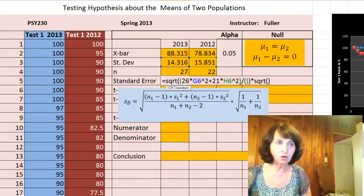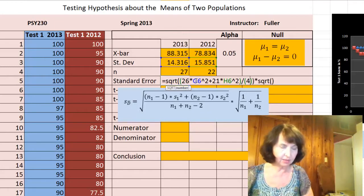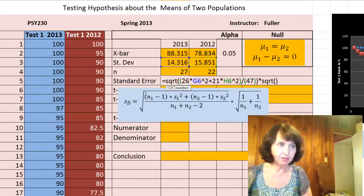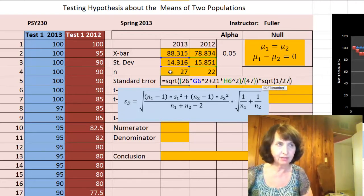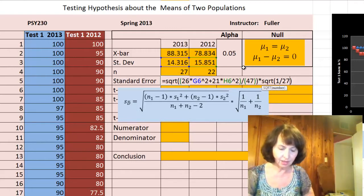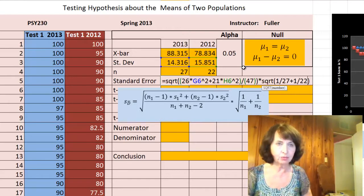This is all for the numerator. And denominator, we add 27 and 22 to give us 49 minus 2 is 47. And this is all for the first square root. The second square root is 1 over the size of the first sample, which is 27, plus 1 divided by the size of the second sample, which is 22.